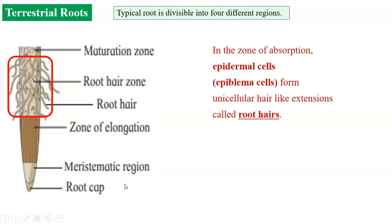The root hair zone is also called zone of absorption. Here the epidermal cells which are called epiblema cells form unicellular hair like extensions called root hair. The root hair increase the surface area manifold and that facilitates the absorption of water. So structure of root hair is very important.